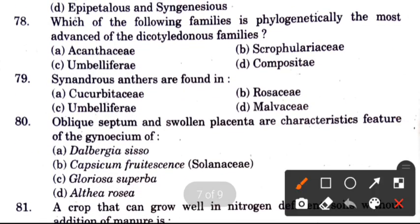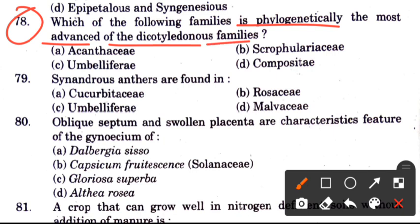Question: Which of the following families is phylogenetically the most advanced of the dicotyledon families? Options are Lythraceae, Scrophulariaceae, Umbelliferae, and Compositae. The answer is Compositae, which is the most advanced dicotyledon family.